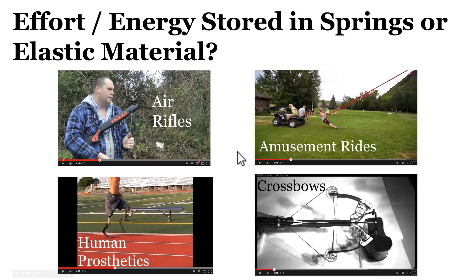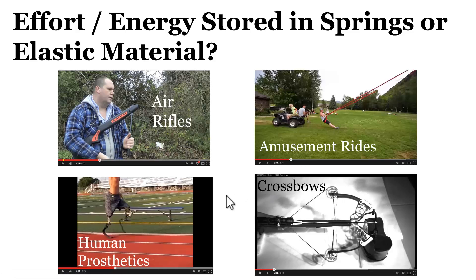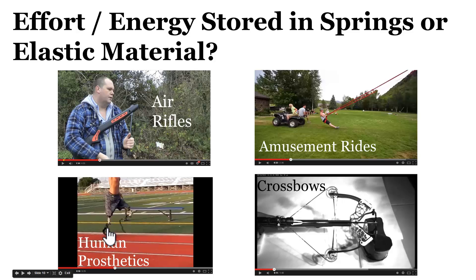We can store energy not just in springs by compressing or stretching them. We can store what we're going to call elastic energy, or the potential energy of a spring, in any material that's elastic — where if you compress it, it wants to push back, or if you stretch it, it wants to pull back. Examples include human prosthetics and crossbows.